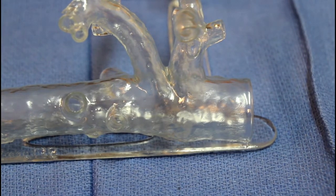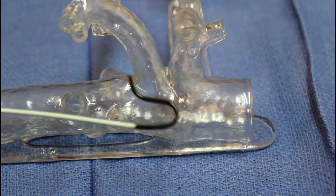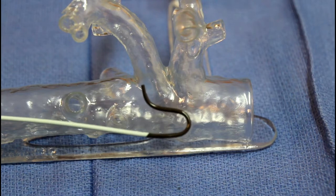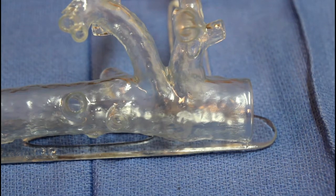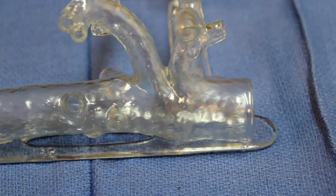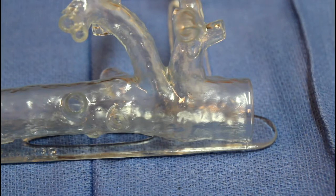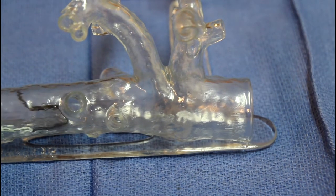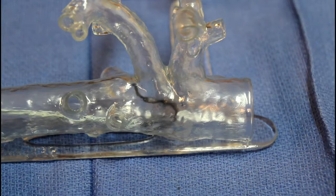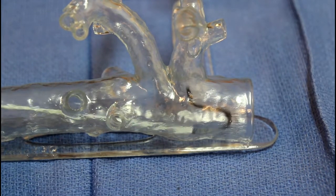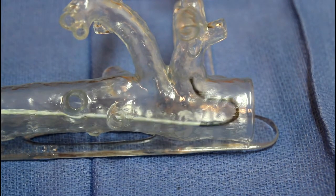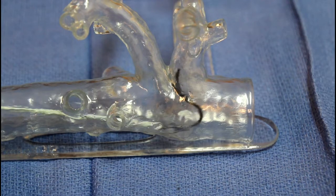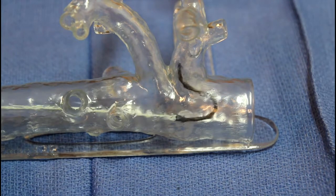Next, you'll want to select a base catheter. In this case I've selected a five French Sos Select catheter, which is my workhorse for celiac interventions. A Simmons One catheter or Cobra catheter would also work well. Advance the catheter into the abdominal aorta until the catheter is just past the origin of the celiac artery. Make sure the catheter is oriented in the proper position, then gently pull back on the catheter until the catheter tip engages the celiac artery origin.